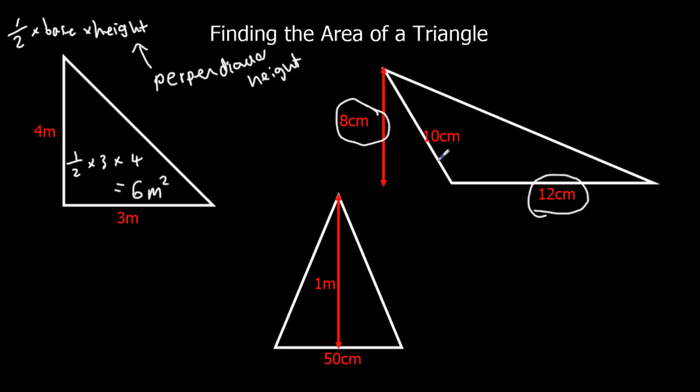This 10 here is just there to mislead us. We don't need it in the question. So half times base times height. So half times 12 times 8. In this case, I think half times 12 first, which is easier. So that's 6 and then 6 eights, that's 48. And this is centimeter squared.